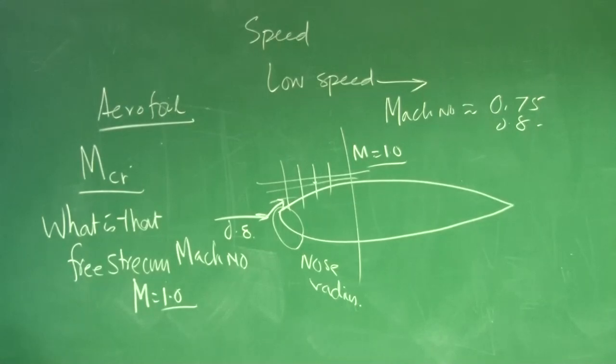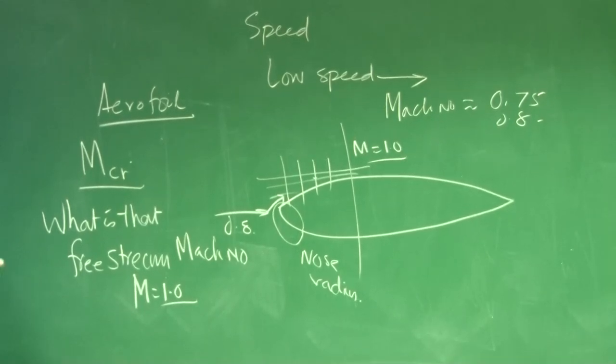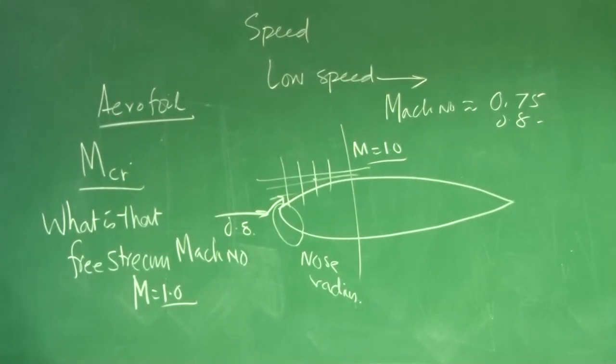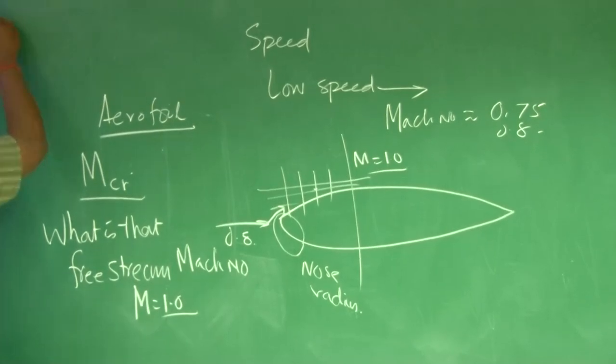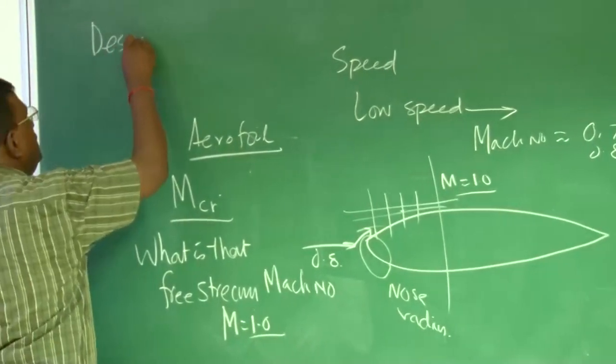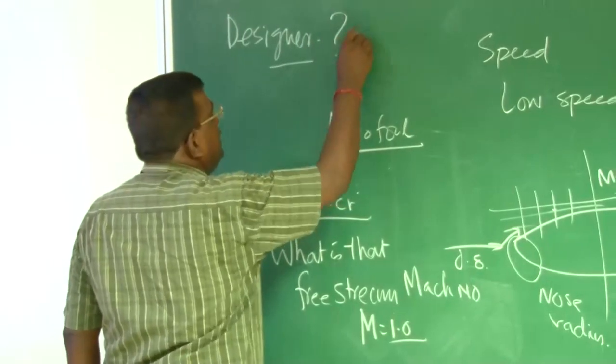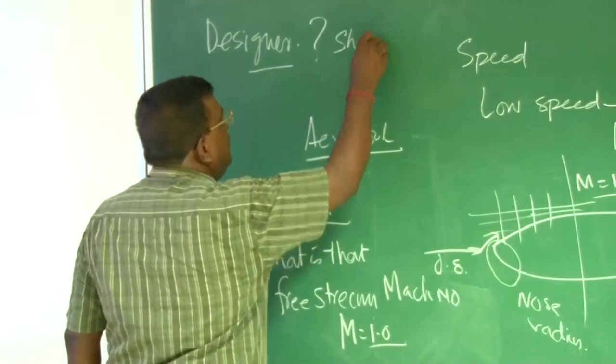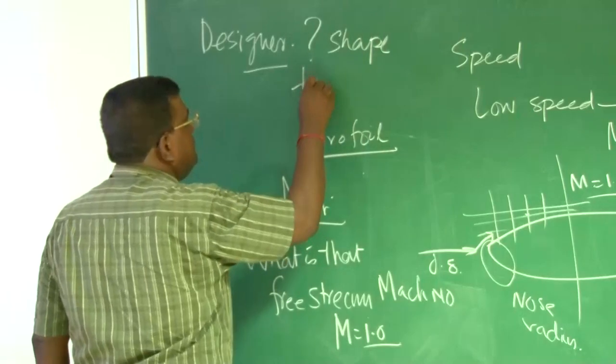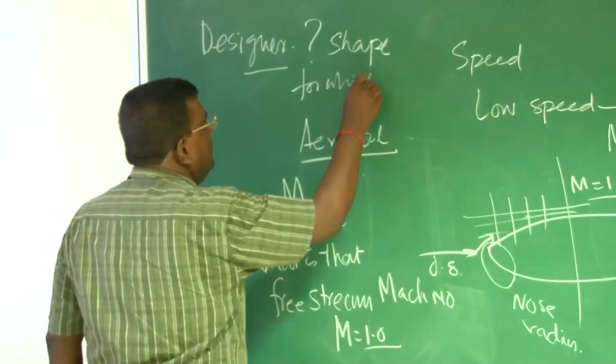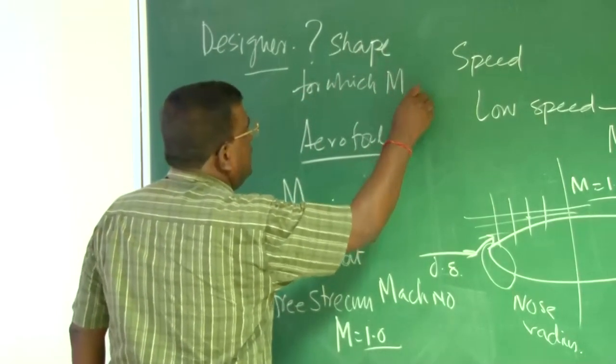Now, the question is, you want to fly at a higher speed? So, what the designer would do? Designer will pose this question differently. Say, what should be the aerofoil shape, so that I have got high value of critical Mach number? So, the designer's question will be, designer, what is that shape, aerofoil shape, for which M critical is higher?